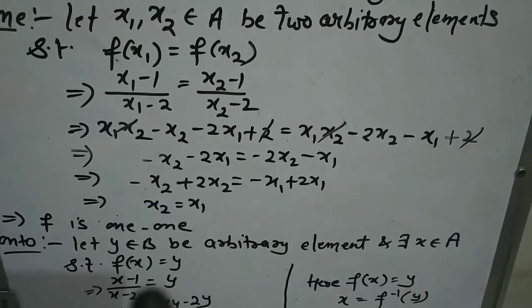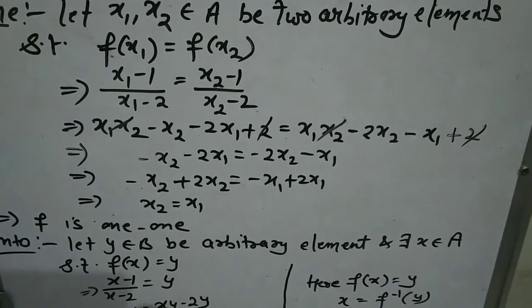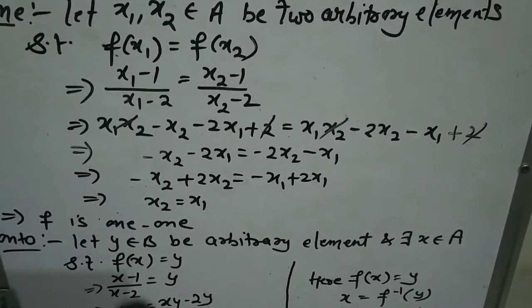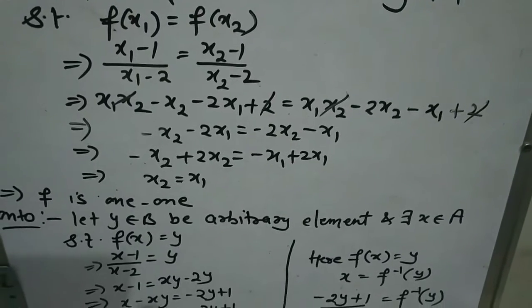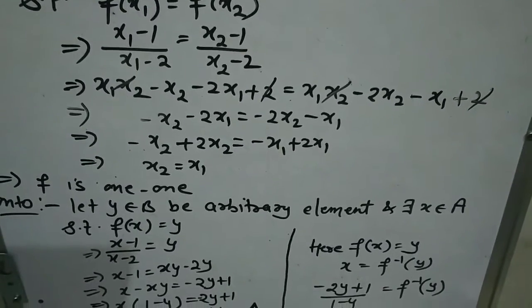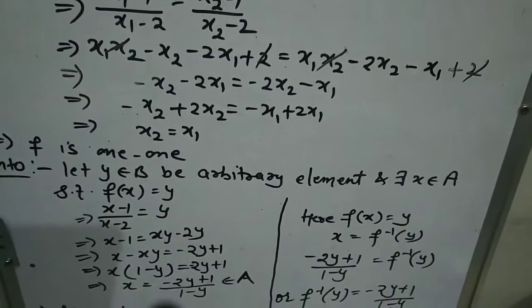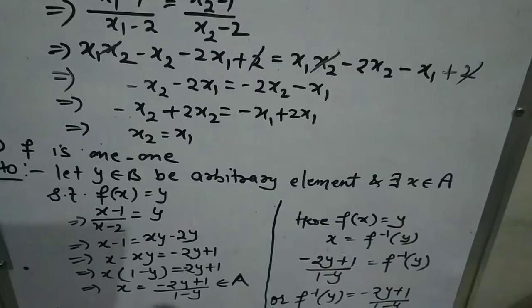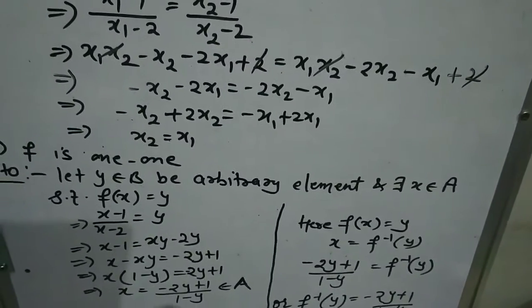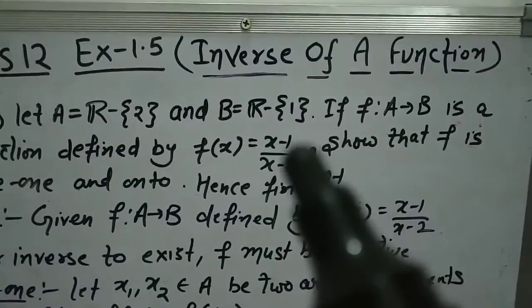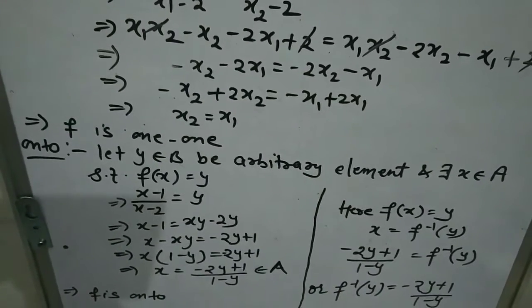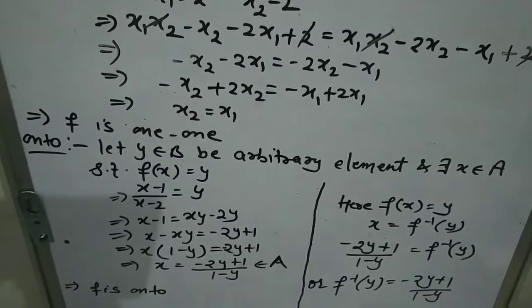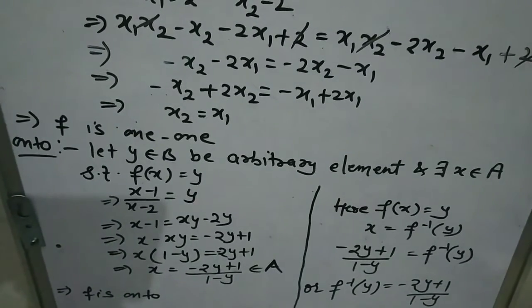For onto: Let y be any arbitrary element from B, and there exists x in domain A such that f(x) = y. So (x-1)/(x-2) = y. Cross multiplying: xy - 2y = x - 1, collecting x terms: x(1-y) = 2y - 1, wait — bringing x terms together, x = (-2y+1)/(1-y). This x is defined as long as y ≠ 1, and since y is from B = R-{1}, y cannot equal 1. So this x is always defined, f is onto, and therefore f is bijective — the inverse of f exists.